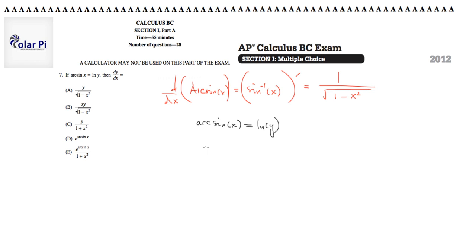Taking the derivative implicitly, we have 1 over square root of 1 minus x squared. And then, on the right side, the derivative of this is 1 over y. And chain rule says the derivative of the inside, which is dy dx.